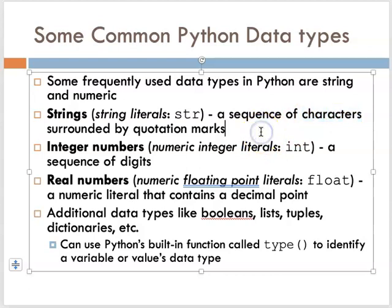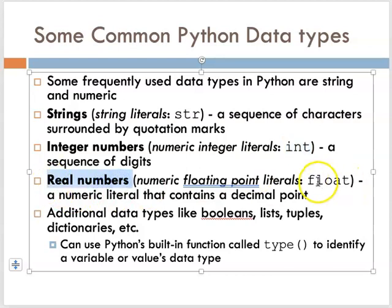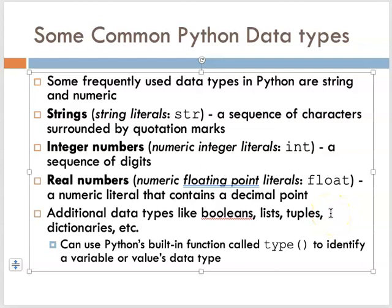Numeric data types come in two major forms in Python. They can be integers, represented by int — basically a sequence of digits representing a numeric value in our decimal positional number system. Or they can be real numbers, which we call floats, because they have a numeric floating point representation — a numeric literal that contains a decimal point and represents a real number. There are also additional data types like Booleans, lists, tuples, and dictionaries, some of which are data structures — very important and very powerful.